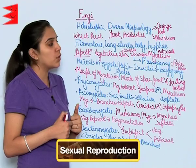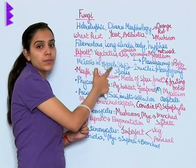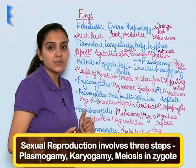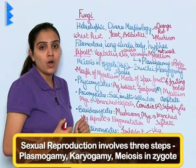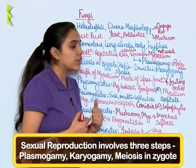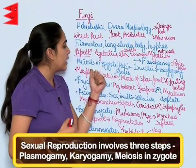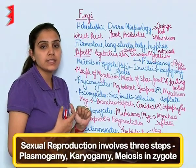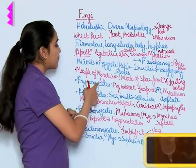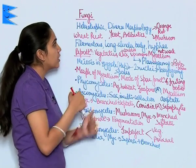Let us understand sexual reproduction — it involves three phases. The first phase is plasmogamy, in which the protoplasm of motile or non-motile gametes is fused. The second stage is karyogamy, in which the two nuclei fuse. Then meiosis takes place in the zygote, giving us haploid spores.